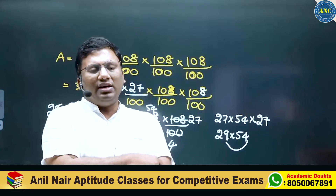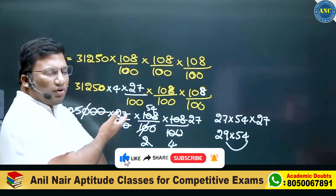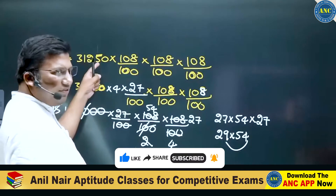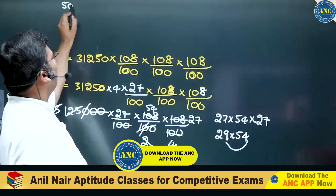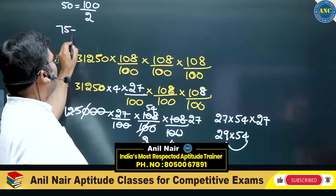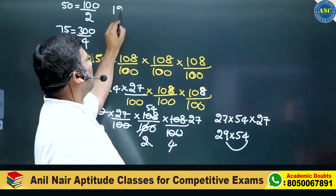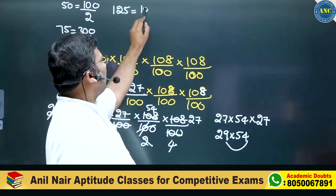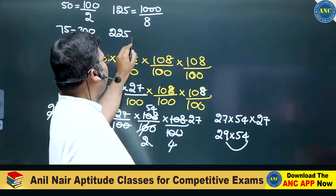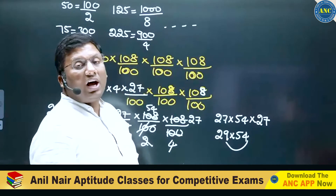I hope the idea is completely clear to you — the last two digits. 50 is 100 by 2. 75 is 300 by 4. 25 is 1000 by 8. 225 is 900 by 4, 900 by 4. So on and so forth — here is my last two digits.